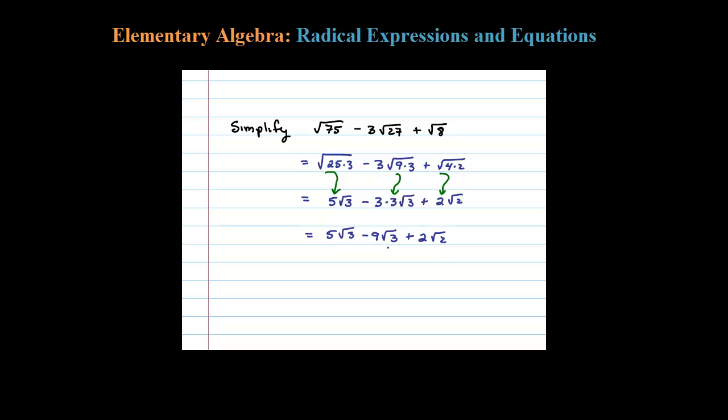Now the square root of 3 terms here—these two are like terms. So I have 5 square root of 3 minus 9 square root of 3, that leaves me with negative 4 square root of 3 plus 2 square root of 2. That's as far as I go because there are no longer any like terms.